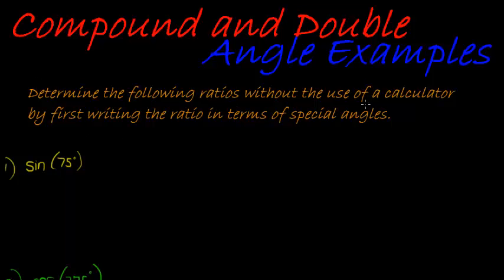Determine the following ratios without the use of a calculator by first writing the ratio in terms of special angles. We see here that we have sine of 75 degrees. Now, sine of 75 degrees is not a special angle, but we can write it in terms of special angles. We know that 75 is 45 plus 30.